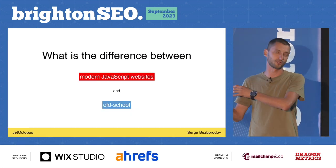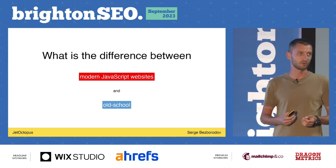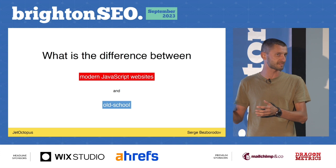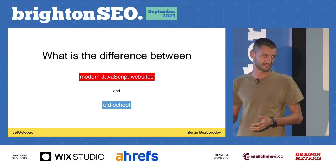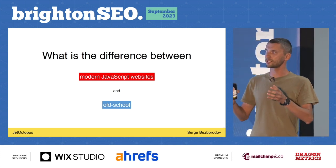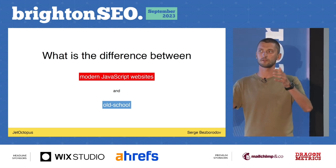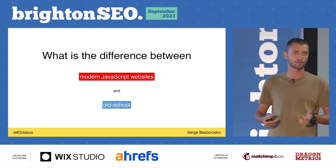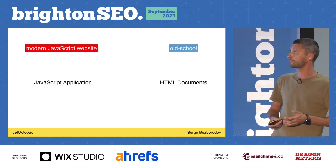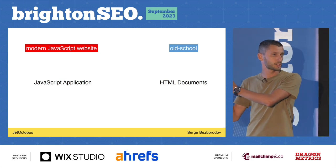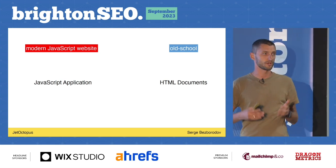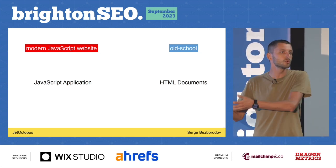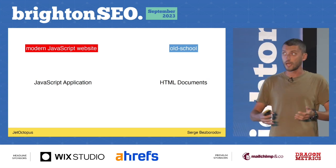Why do we not like JavaScript at all? Let's go a bit of history. What's behind modern JavaScript websites and old school websites? When we are talking about modern JavaScript websites, we hear words like React, Angular, Ember.js, whatever — some framework. Old school websites are HTML documents. A server returns a piece of HTML code, the browser parses it, Googlebot parses the document, and we're good.